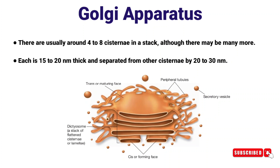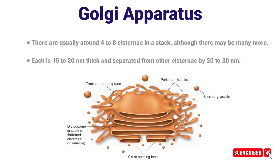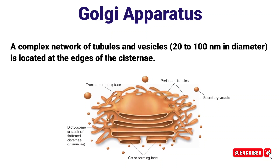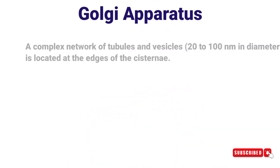Each Golgi apparatus cisterna is 15 to 20 nanometers thick and separated from other cisternae by 20 to 30 nanometers. A complex network of tubules and vesicles, 20 to 100 nanometers in diameter, is located at the edges of the cisternae.